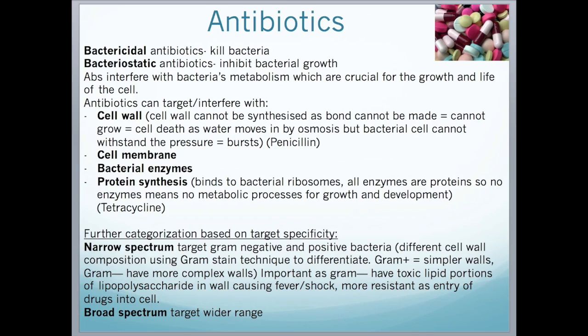Antibiotics can be further categorized by target specificity into narrow spectrum and broad spectrum. Narrow spectrum antibiotics target either gram negative or gram positive bacteria. It is important to distinguish between these using a gram stain technique because there is a difference in the cell wall. Gram positive bacteria have a simpler cell wall; gram negative have a much more complex wall. Gram negative bacteria have toxic lipid portions of lipopolysaccharides in the wall, which can cause fever and shock, and are more resistant to drugs because the drugs have to penetrate further into the cell. Broad spectrum antibiotics target a wider range of bacteria.